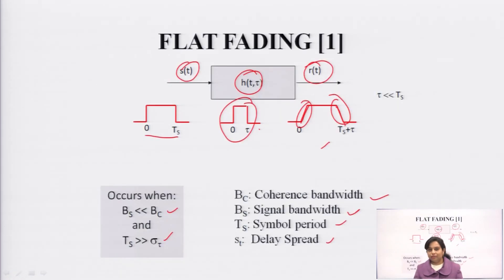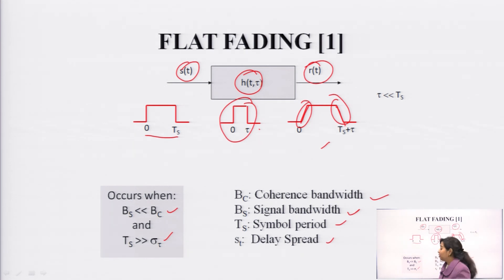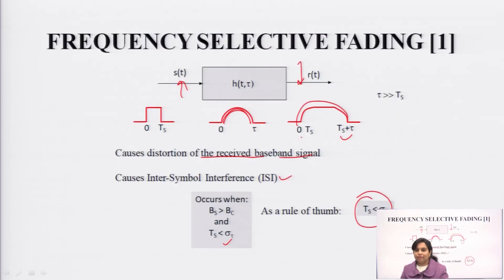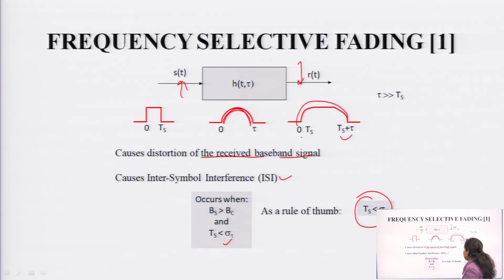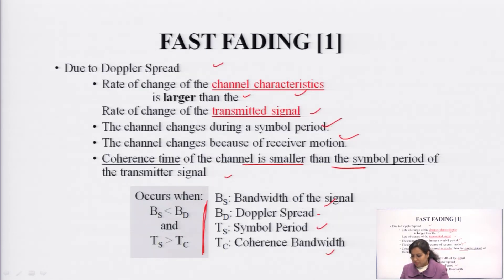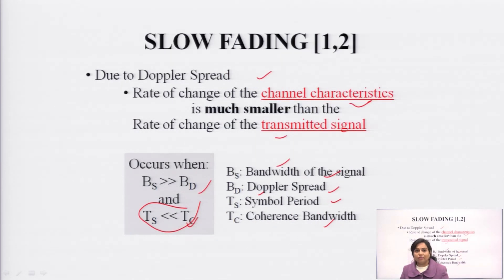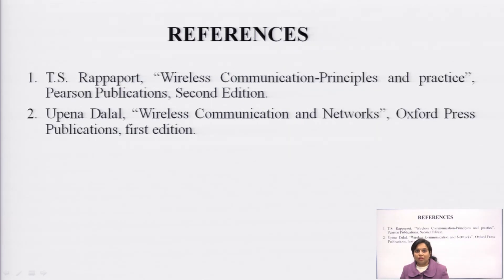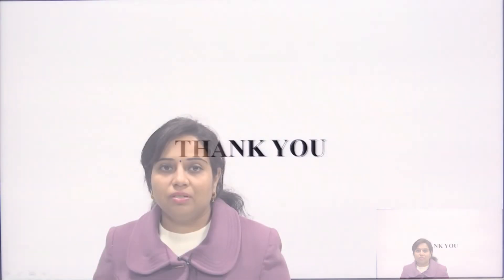We have seen different channel characteristics: flat fading has a rectangular window impulse response, and when the signal passes through it, the signal gets tapered. In frequency selective fading, the channel has a parabolic shape. Fast fading is when the receiver moves at very fast speed, and slow fading is when the receiver moves at a very small speed. This is all about today's lecture. Thank you.